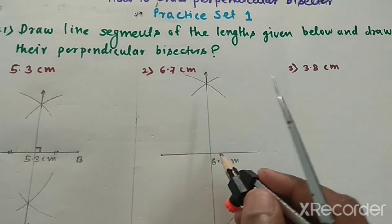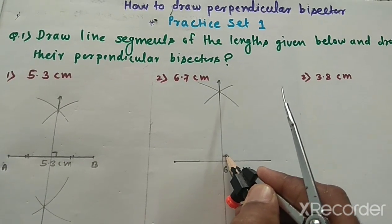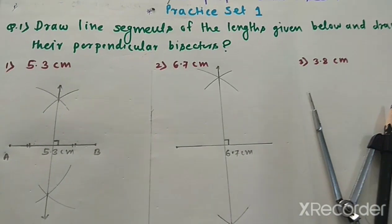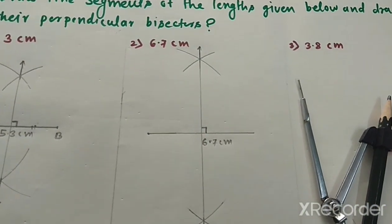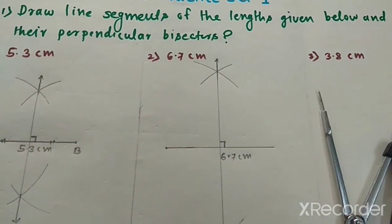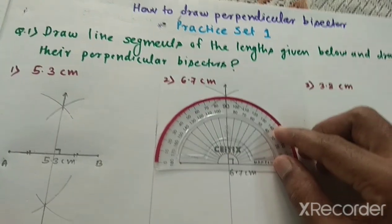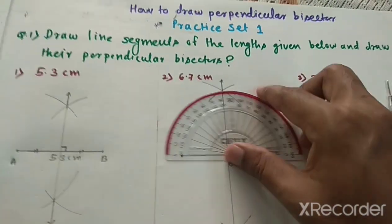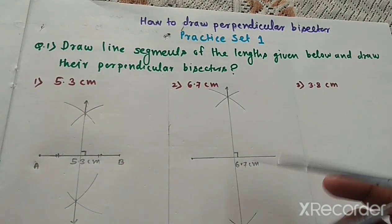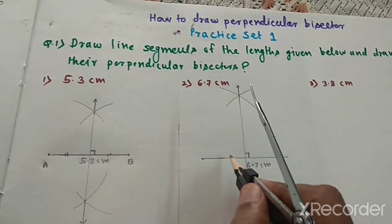यह है perpendicular bisector. मतलब यहाँ पे angle है 90 degree. You can check it with protractor. यह angle 90 degree है. See, angle is 90 degree means perpendicular, and bisect means यह जो segment है 6.7 cm का उसके दो equal parts बन गई है.